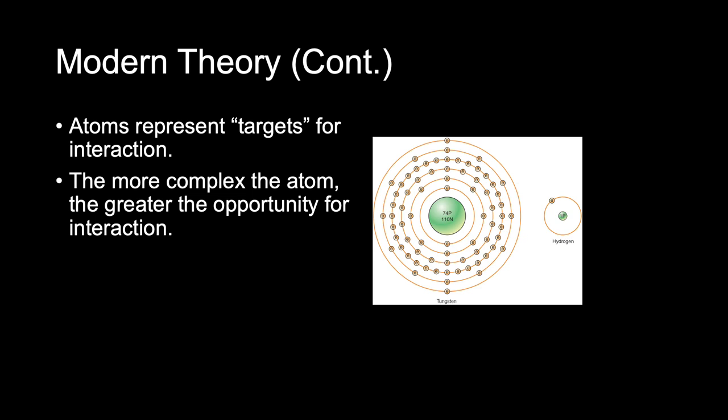Continuing the target analogy, it would be easier for somebody to hit a target that is three feet in diameter than one that is only three inches in diameter. This diagram shows the atom complexity — the comparison in size of a hydrogen atom, which is very small, versus a tungsten atom, which is quite a bit larger. It would definitely be easier to interact with that large tungsten atom than the small hydrogen atom.